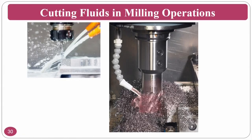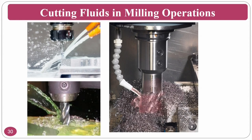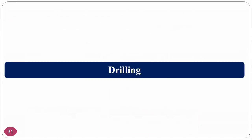Cutting fluids in milling: since milling is performed at high speed, temperature rises significantly, so emulsion-type cutting fluids are normally used. At lower speeds, mineral oil can be used for lubrication. For very high speeds, cutting fluids with a high water content are preferred.